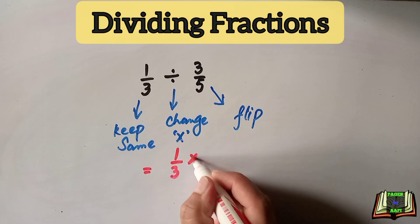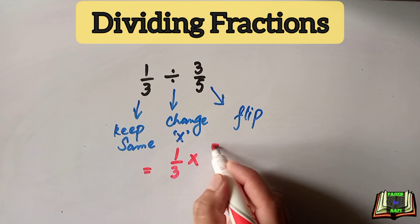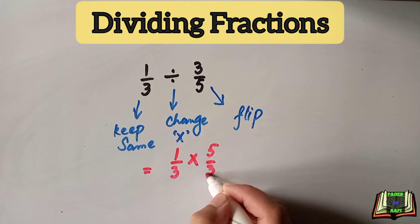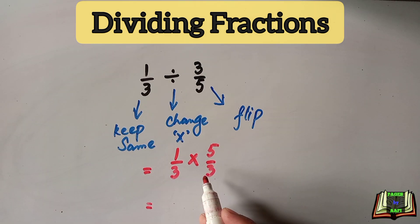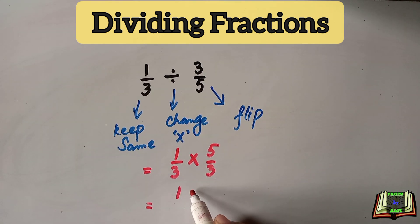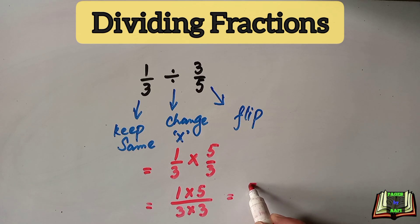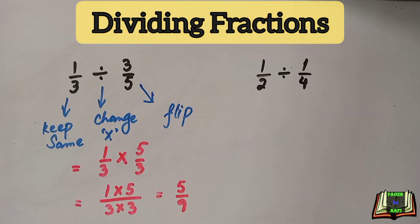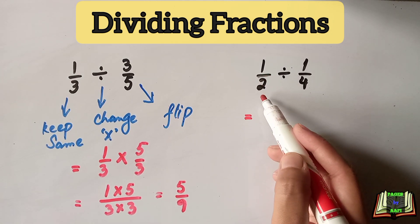Now let's start dividing. One over three will be the same, divide will be changed into a multiply sign, and three by five will be changed into its reciprocal, five by three. Now we multiply the numerators and multiply the denominators: one into five, three into three, so it is equal to five by nine. That is the answer.